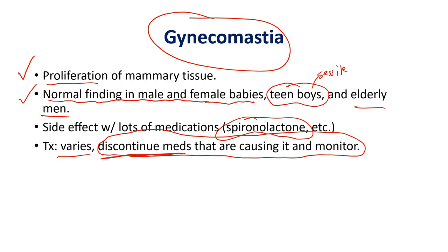So that covers the primary features of benign breast conditions — the primary diseases, symptoms, and conditions within the benign group of breast pathology. The next video will cover malignant breast conditions, and the last one will cover congenital breast anomalies. I hope this helped and I'll see you in another video.